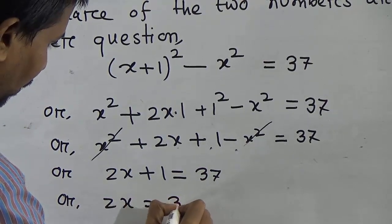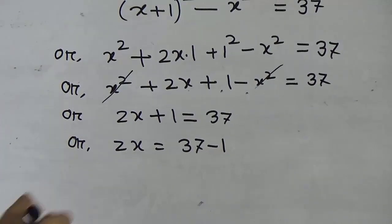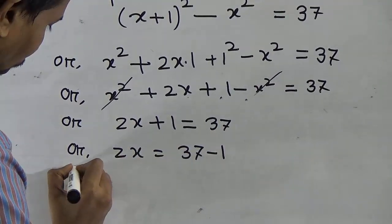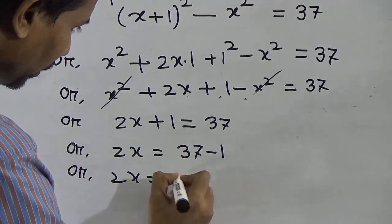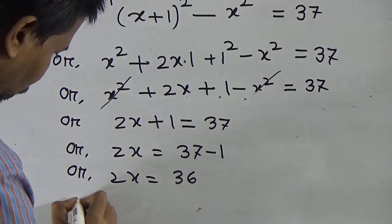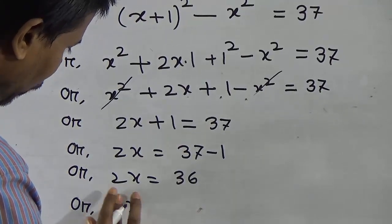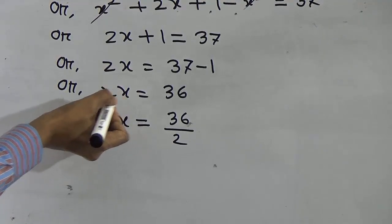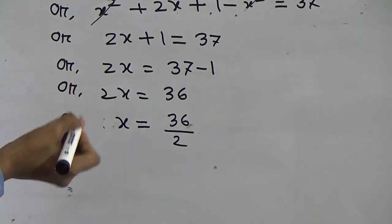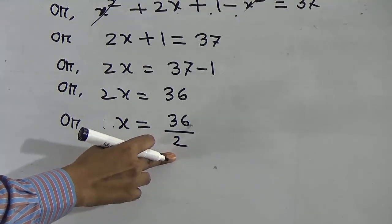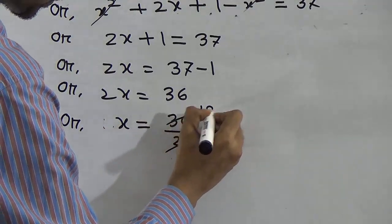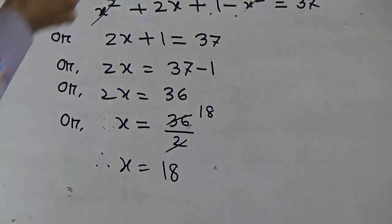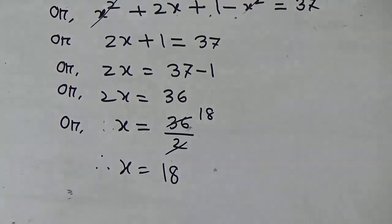So 2x + 1 = 37. By the law of transposition, 1 moves to the right side and becomes minus: 2x = 37 minus 1, which equals 36. Therefore x = 36 divided by 2. The coefficient 2 goes to the denominator, so x = 18.